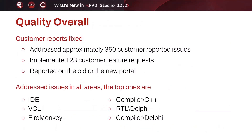Quality overall took a lot of focus and attention, despite this webinar being focused primarily on new features. We addressed approximately 350 customer-reported issues across the various subsystems and implemented almost 30 feature requests — tickets reported on the old or the new quality portal. In terms of focus areas, the largest number of tickets was addressed in the IDE, VCL, and FireMonkey. We also addressed a number in the C++ and Delphi compilers and in the Delphi runtime library.